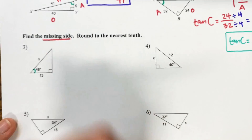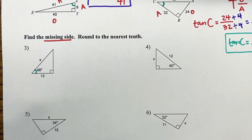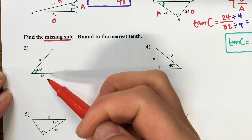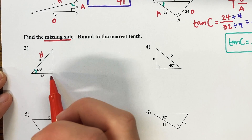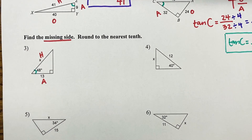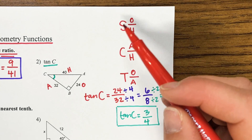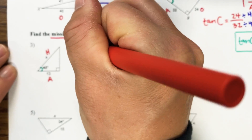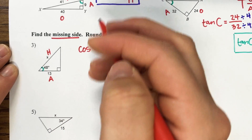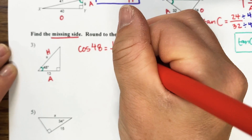The first thing we want to do is identify what angle it gives us. At number 3, it gives us 48 degrees. Using 48, what two sides does it give us? It gives us our hypotenuse because X is across from the right angle, and 13 is right next to that 48, so that is my adjacent side. Which trigonometric function uses adjacent and hypotenuse? Cosine. So we set this up: cosine of 48 degrees equals adjacent 13 over hypotenuse X.